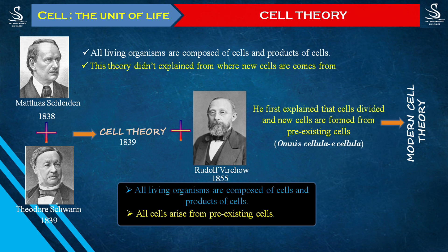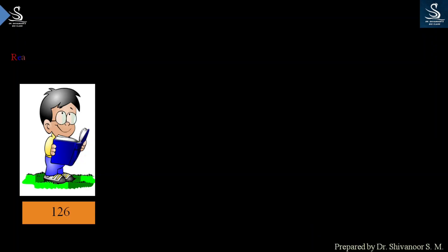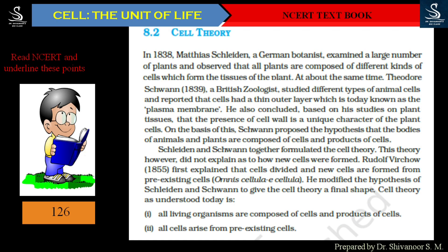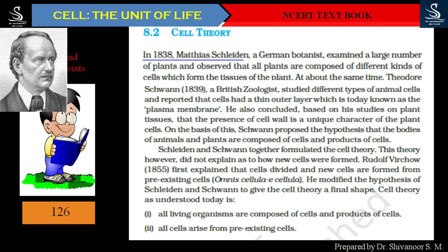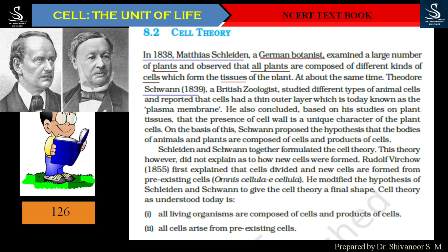Let us also quickly see what is mentioned in the NCERT book. In the year 1838, Matthias Schleiden, a German botanist, examined a large number of plants and observed that all plants are composed of different kinds of cells and those cells form tissues inside the plant. About the same time, in the year 1839, Theodor Schwann, a British zoologist, studied different kinds of animal cells and reported that cells have an outer thin layer today called the plasma membrane. Based on his study of plant cells, he also concluded that the presence of the cell wall is a unique characteristic of all plant cells.